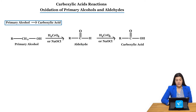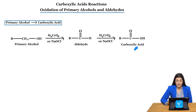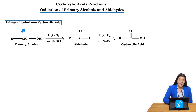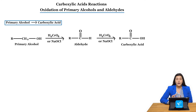As we saw before with oxidation of alcohols, if we then use the same oxidizing agent — still not as strong — that allows us to get to a carboxylic acid. This is the synthesis: how we form a carboxylic acid. We can start with the primary alcohol and use either a weak oxidizing agent twice or a strong oxidizing agent once.